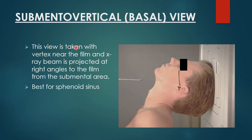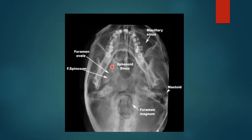The next view is submental vertical or basal view. This view is taken with the vertex near the film and the x-ray beam is projected at right angles to the film from the submental area. It is best for visualizing the sphenoid sinus. Here is an example of the basal view showing the bilateral sphenoid sinuses — this is the right sphenoid sinus and this is the left sphenoid sinus.